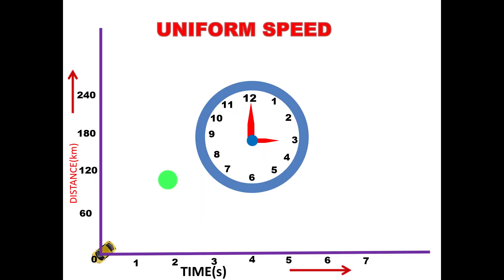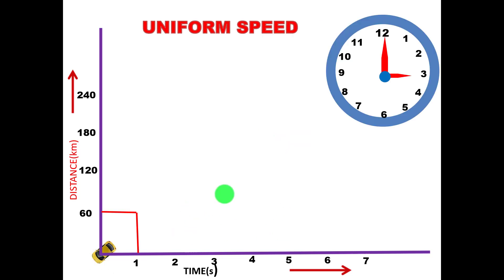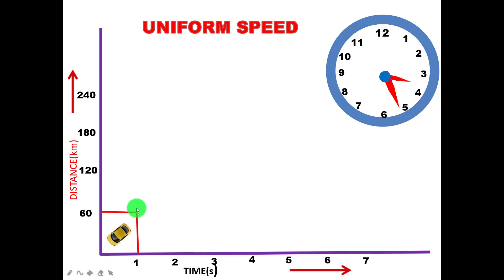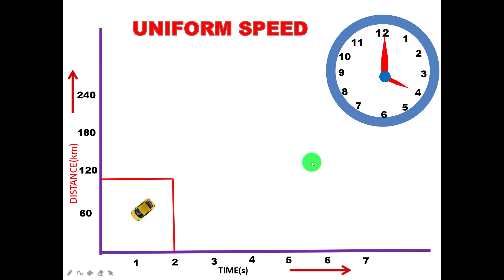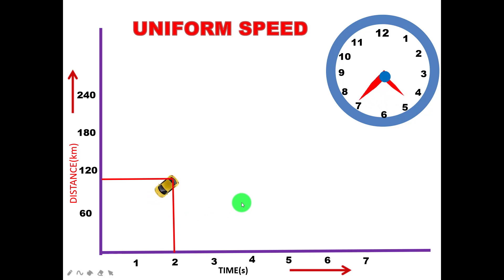Consider a car initially at rest at position 0. At 3 o'clock, the car starts and reaches 60 km after the first one hour. At 4 o'clock, the car travels from 60 km to 120 km in the next one hour. Every one hour, the car travels 60 km.